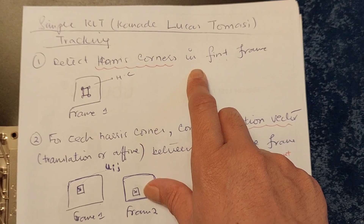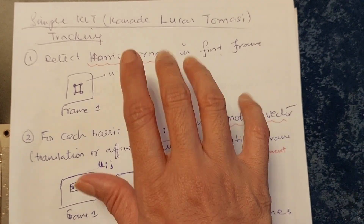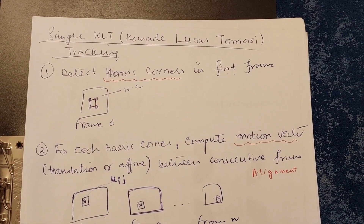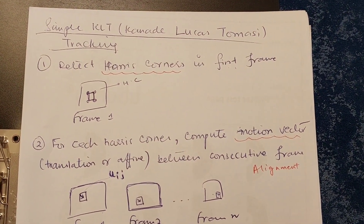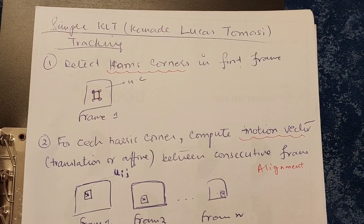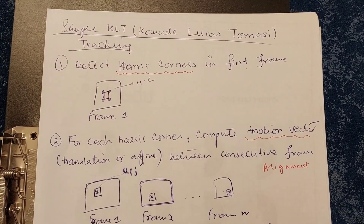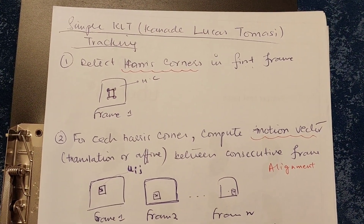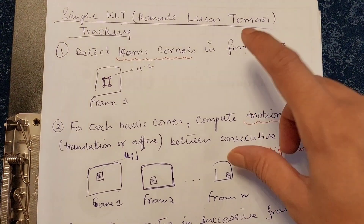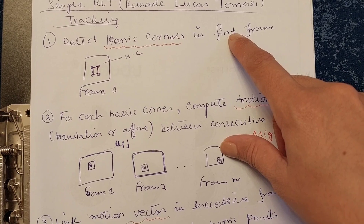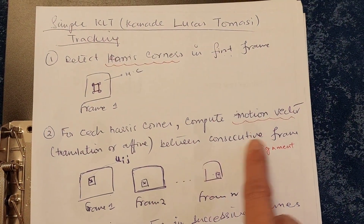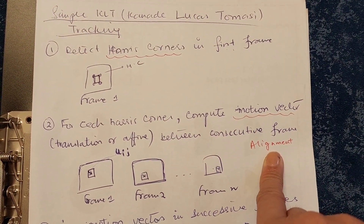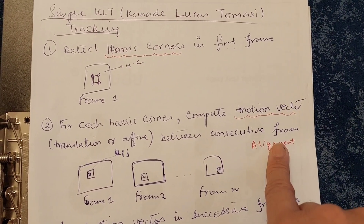In a previous video, we already discussed how to calculate Harris corners, so detecting them is not a big deal. You simply find the eigenvalues, and the point where both eigenvalues are large — and neither one is much larger than the other — is considered a corner. The real challenge in this tracking algorithm is finding the motion vectors and aligning the detected Harris corners using them.